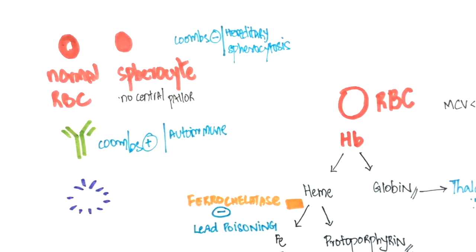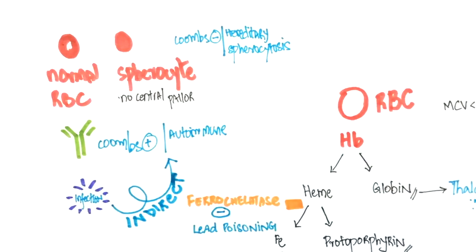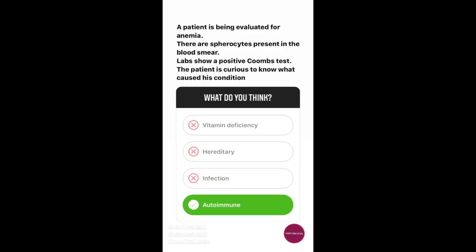Although infection can trigger autoimmune hemolytic anemia, it isn't the direct cause. Vitamin deficiency would not present with such features.